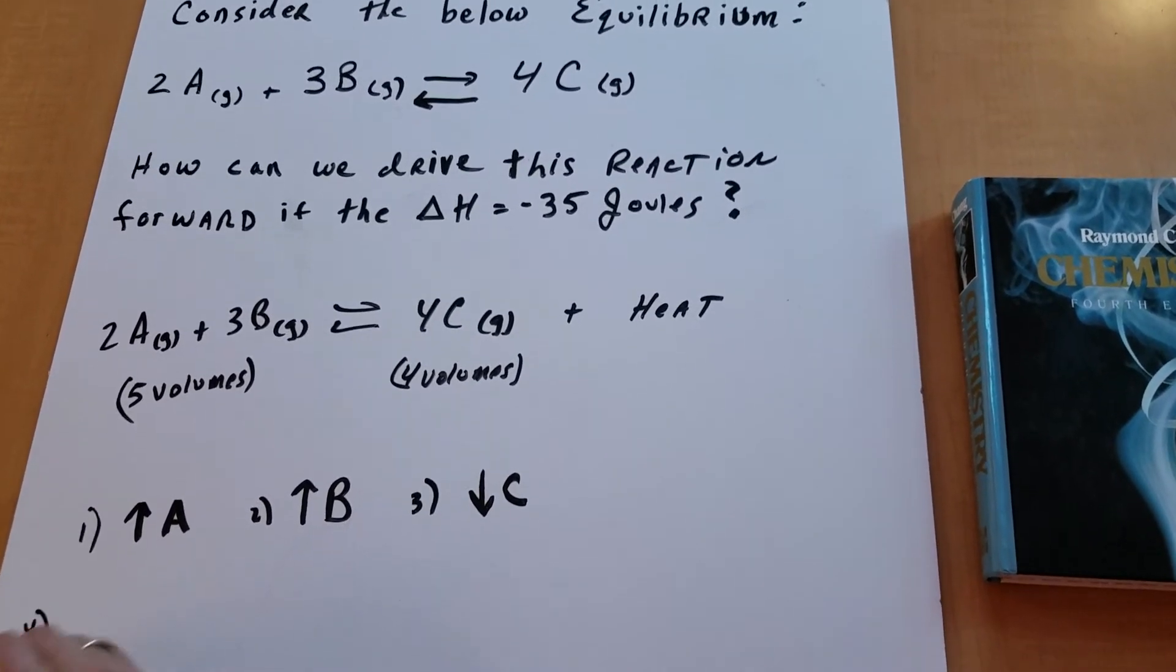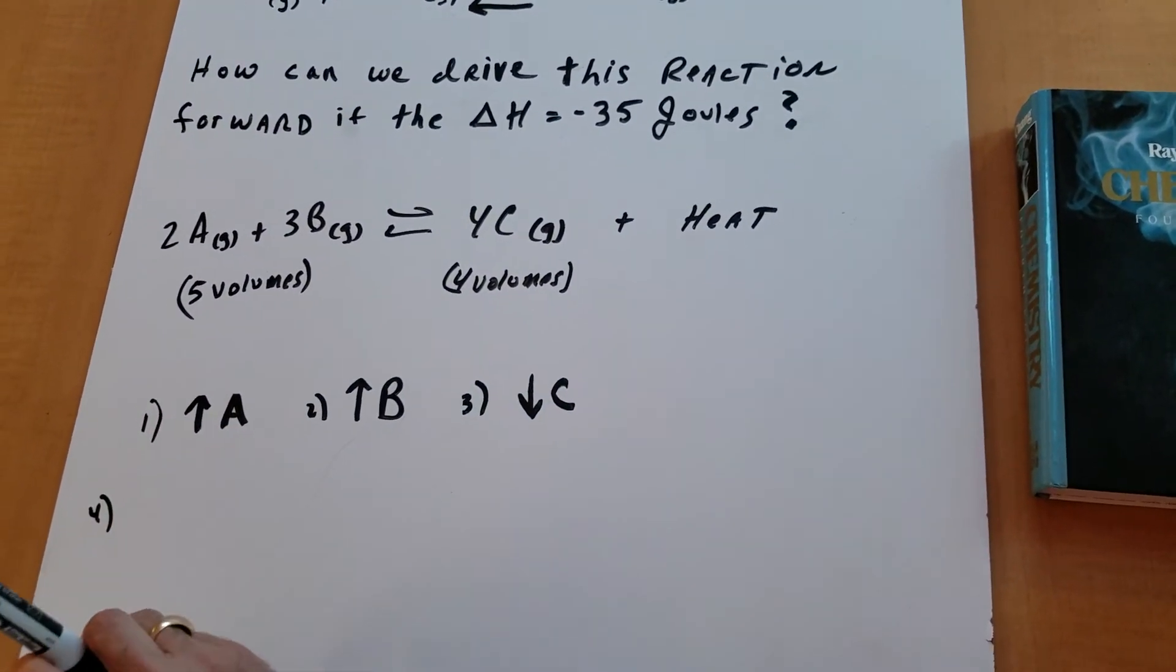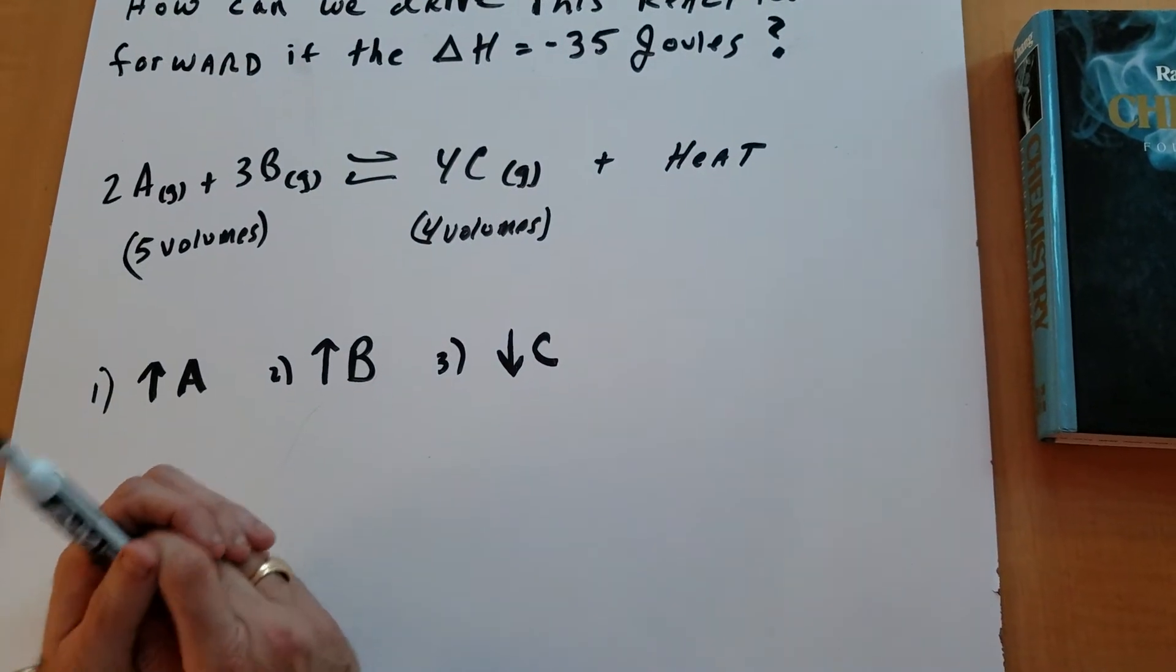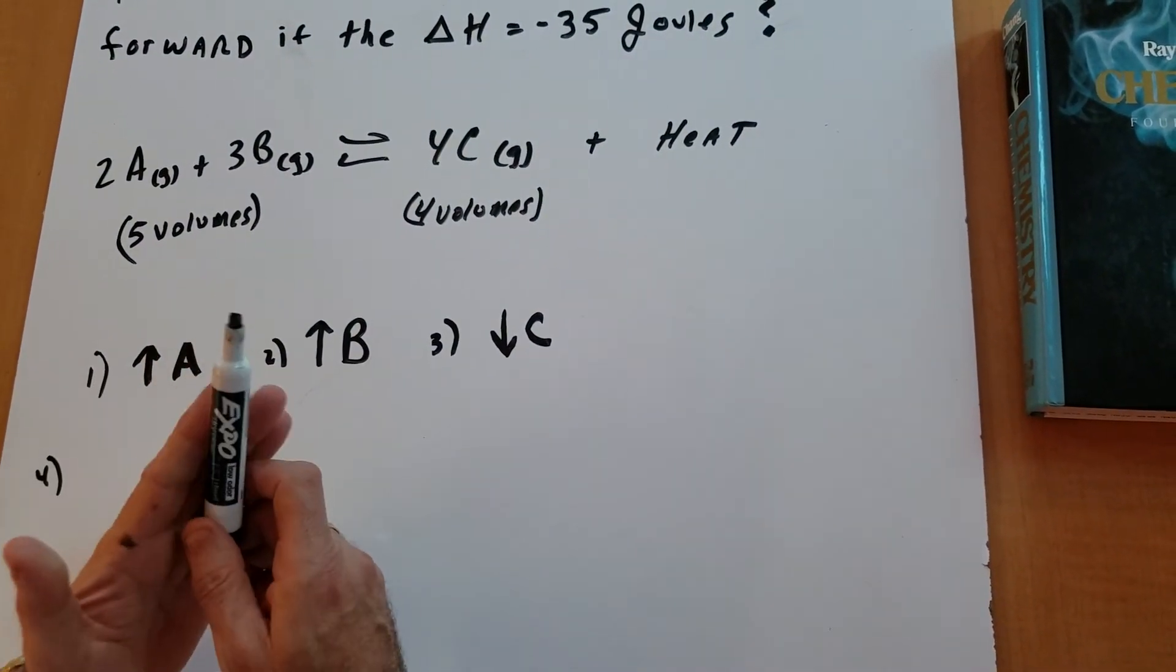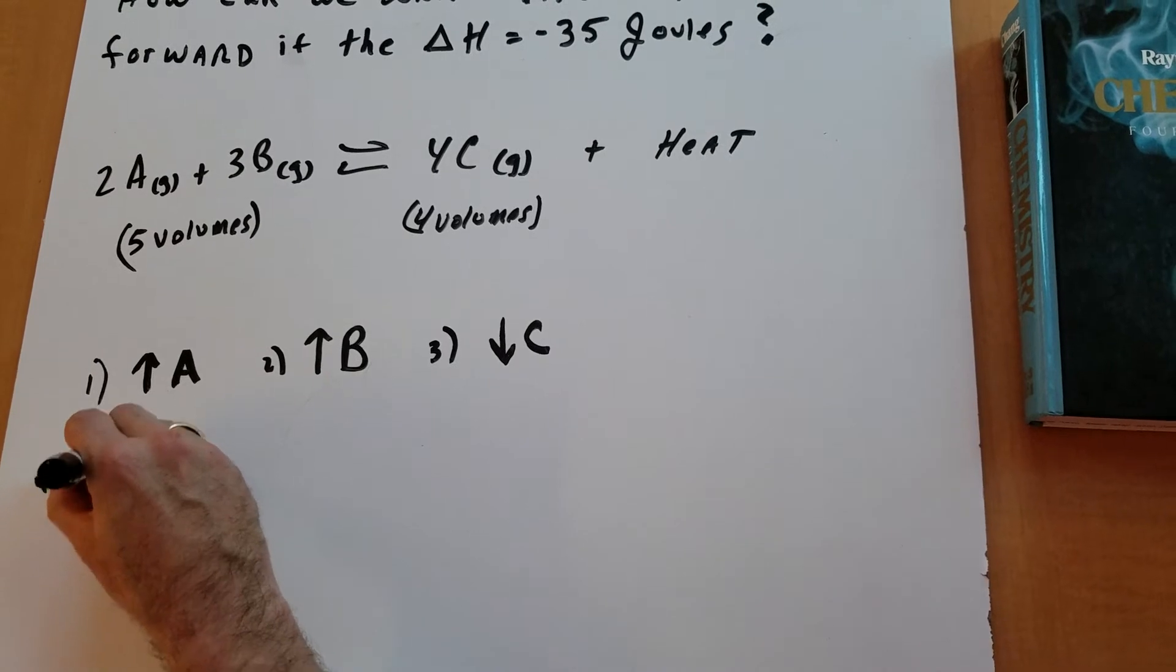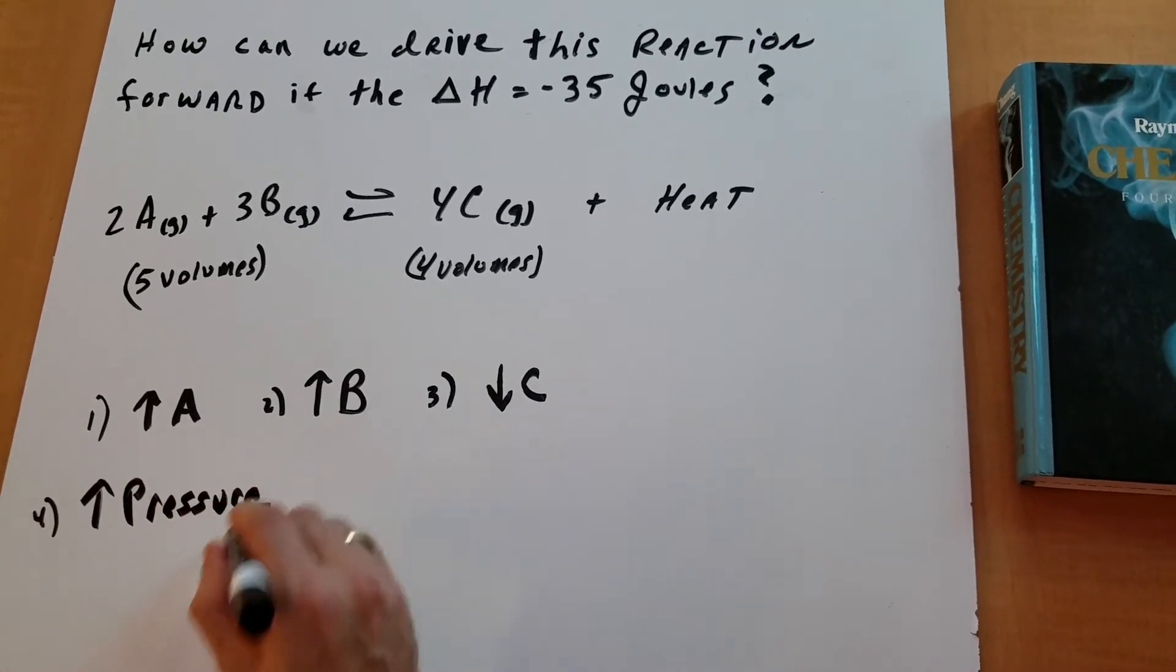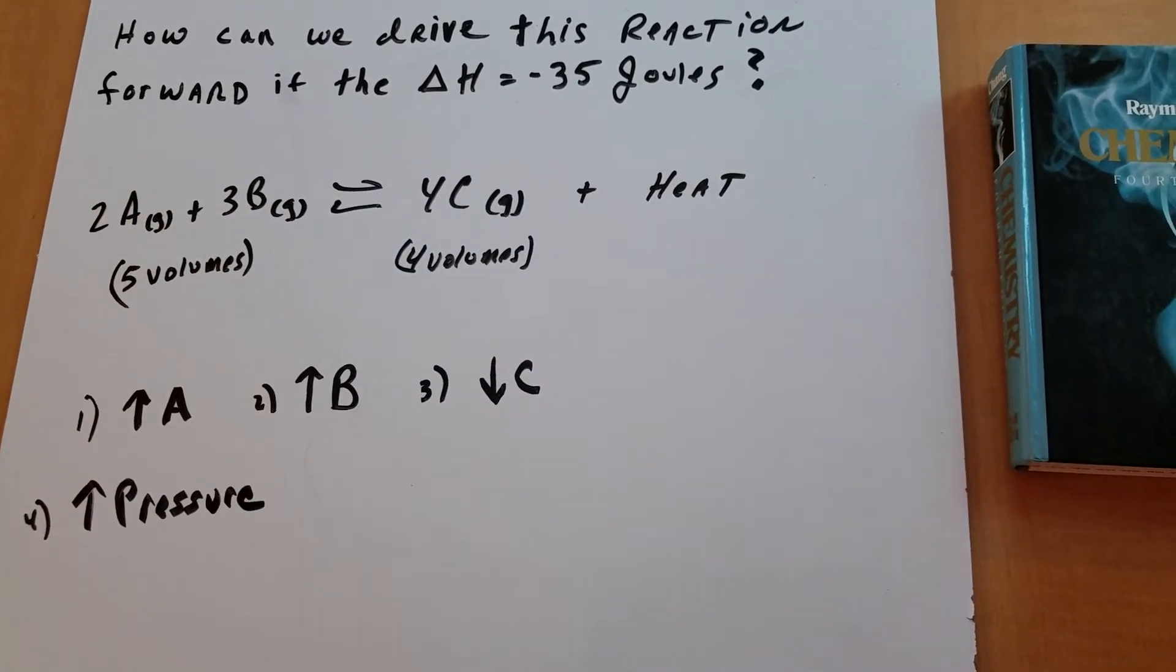Now, number four. I want to move to the right side. I want to move to low volume. Now, if you remembered from the gas laws, Boyle's law says that pressure and volume vary indirectly. So if you want to move towards a lower volume, what would you do? You would increase the pressure. So by increasing the pressure, that would make the volume smaller and it would move to the smaller side.